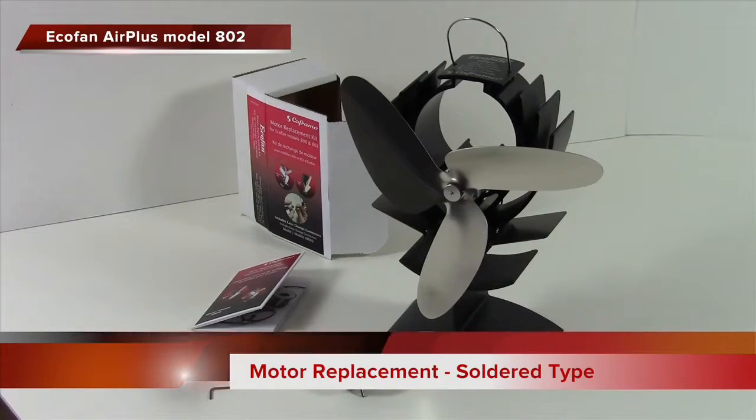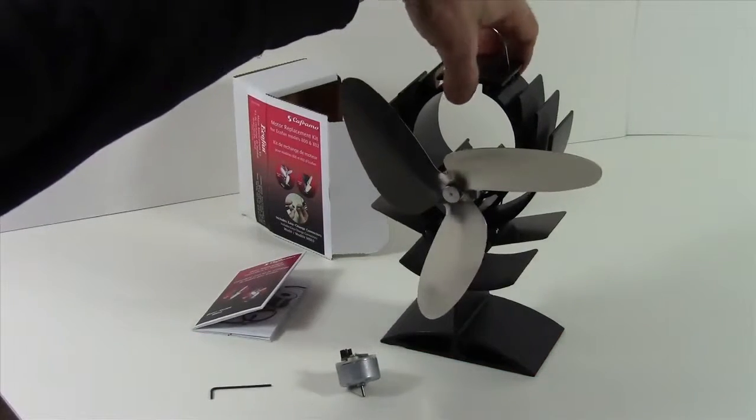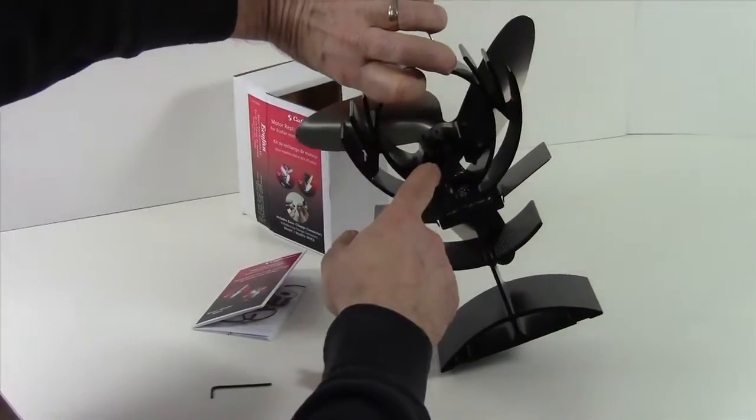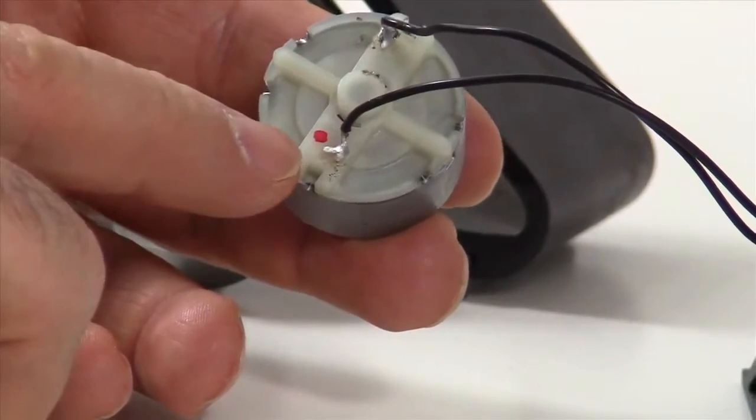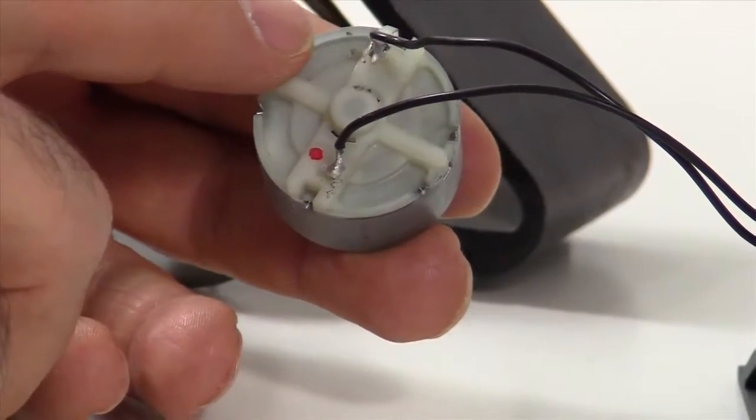Today we are doing a motor replacement on a model 802. This procedure is valid if the back of your motor looks like this. We can see that one wire is connected to a terminal with a red dot and the other black wire is connected to a terminal that's unmarked.